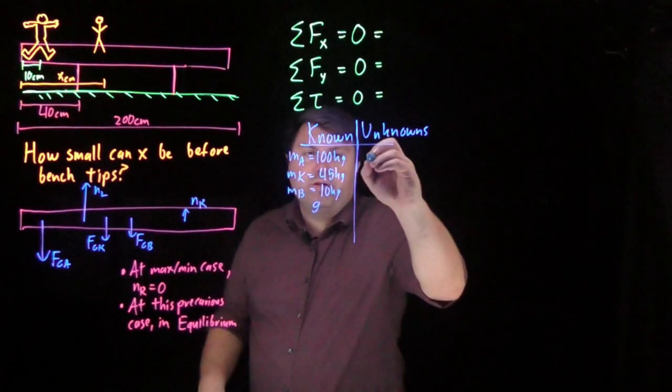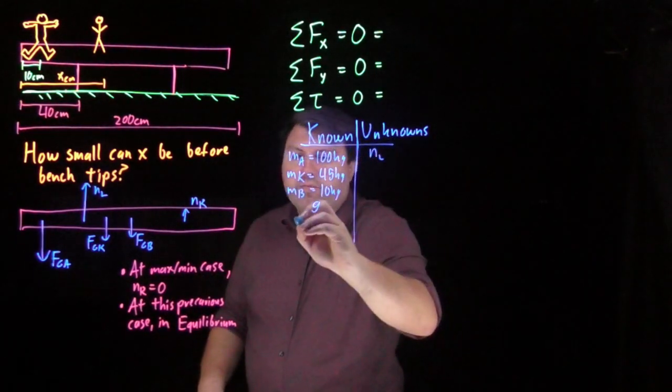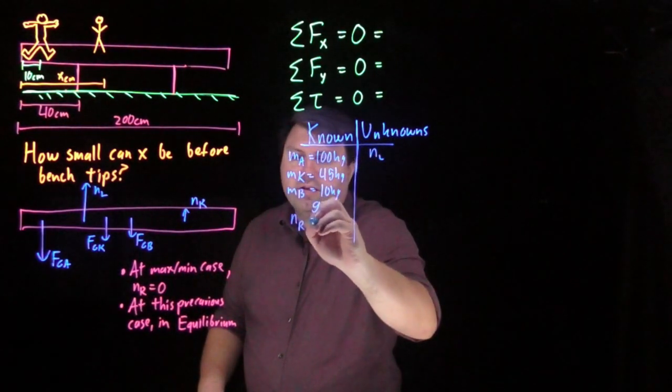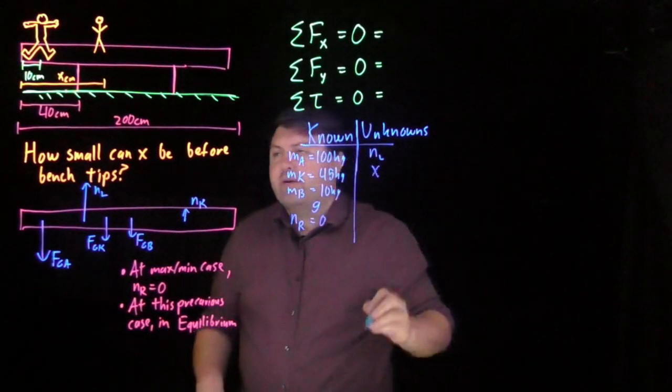So in our unknowns, we don't know the normal force from the left. We do know the normal force from the right is zero. And we don't know x.